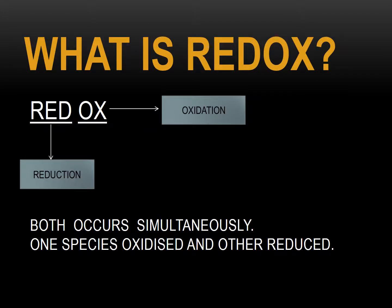First of all, what is redox? Redox is composed of two words: red and ox. Red means reduction and ox means oxidation. They are made from two words — red plus ox. Both occur simultaneously: one species is oxidized and the other is reduced.